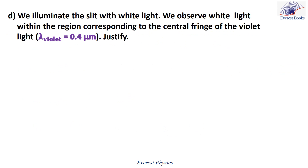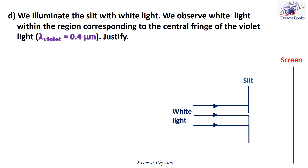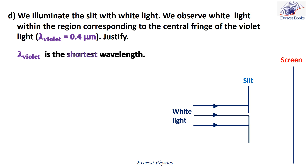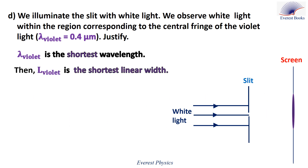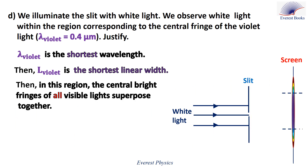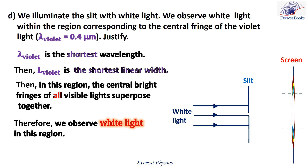For part d, when we illuminate the slit with white light, we observe white light in the region corresponding to the center of the violet light, which has a wavelength of 0.4 micrometers. Since lambda_violet is the shortest wavelength, l_violet is the shortest linear width relative to the other visible lights, as shown in the animation. In this region, the central bright fringes of all visible lights are superposed together, therefore we observe white light in this region.